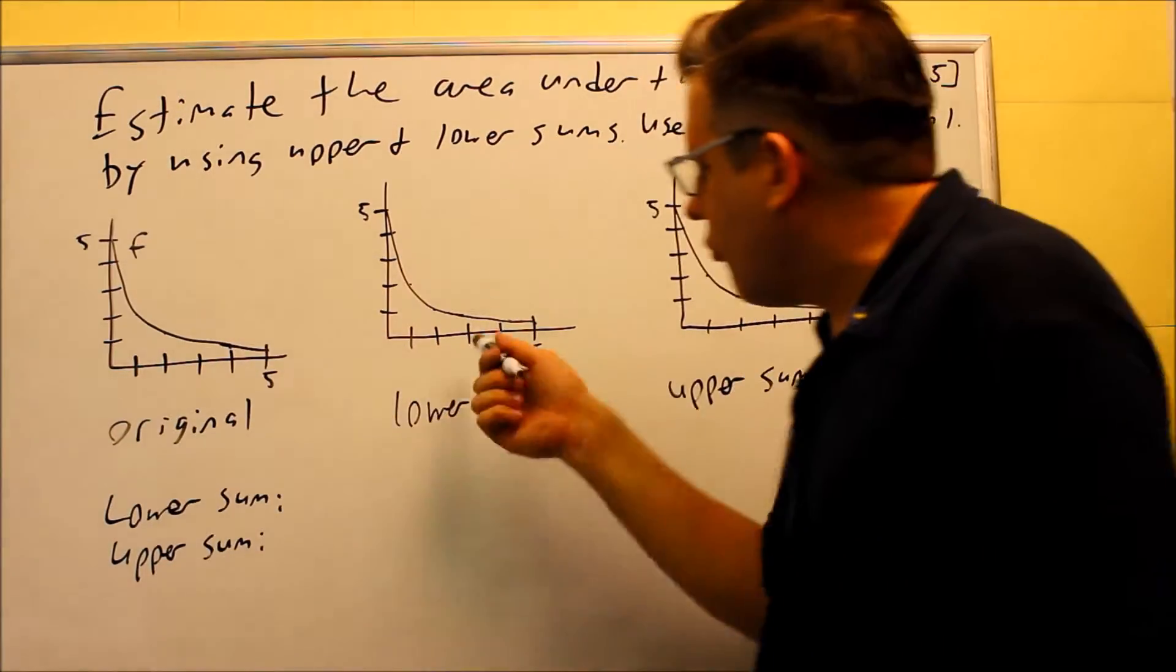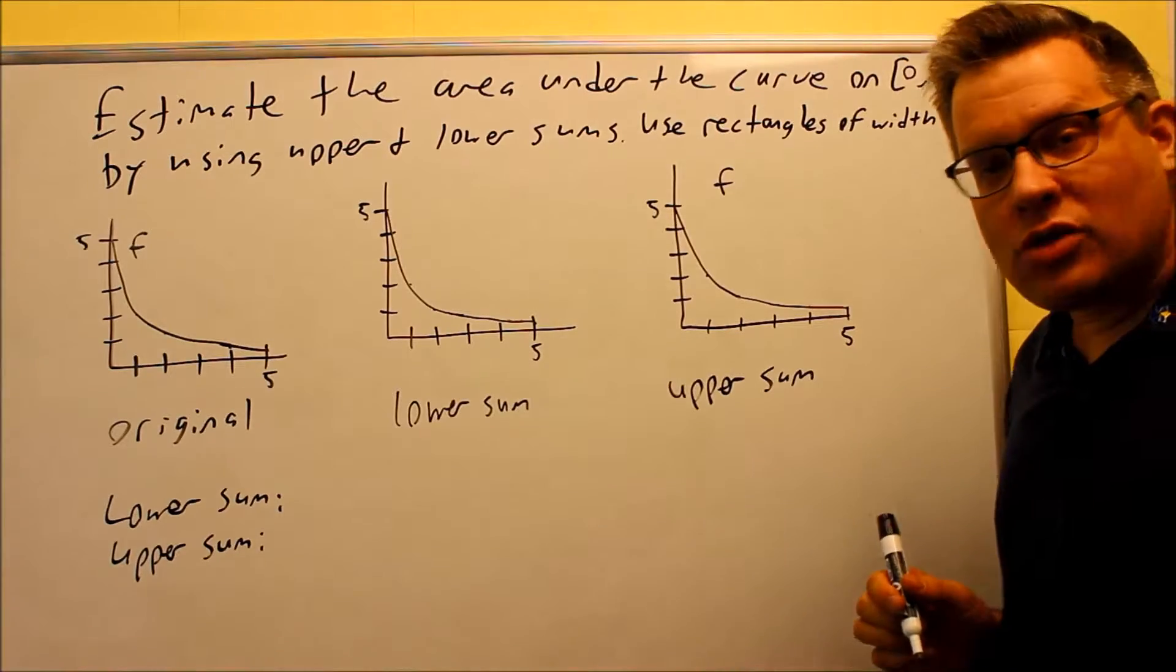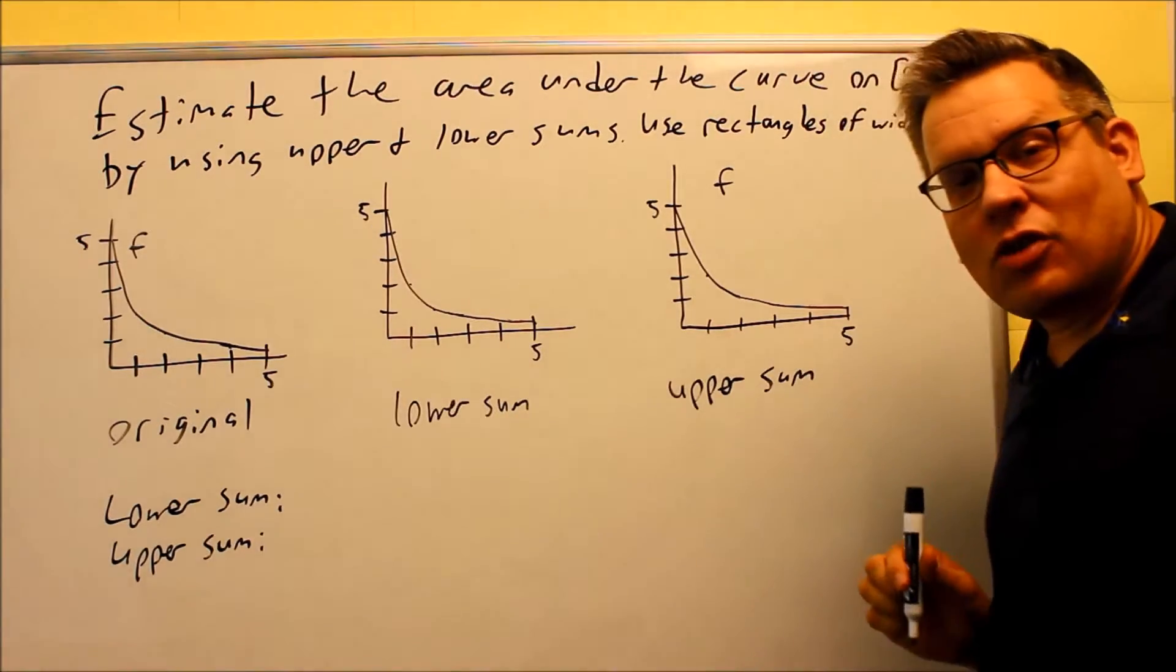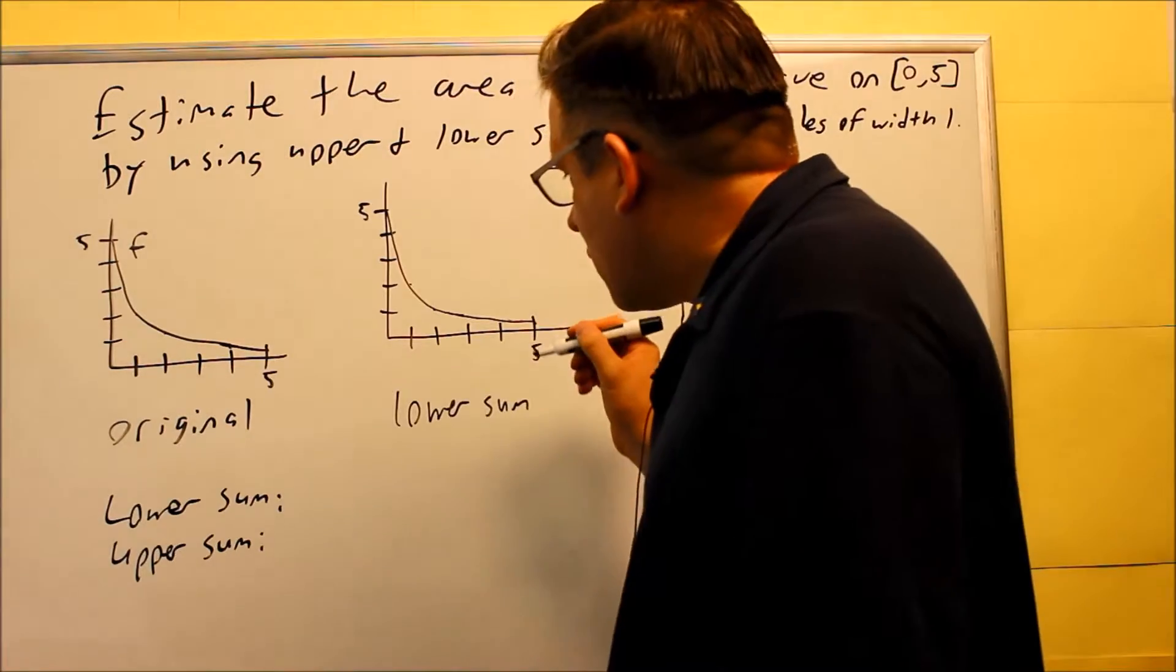Okay, so here's the original one. First, we need to draw in the rectangles for the lower sum, and then we're going to do the math on that to figure out what the lower bound is for the area.